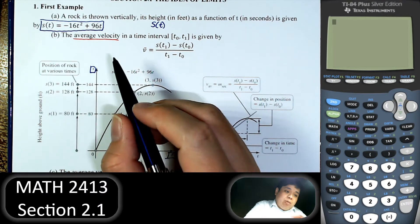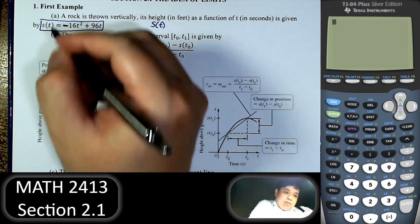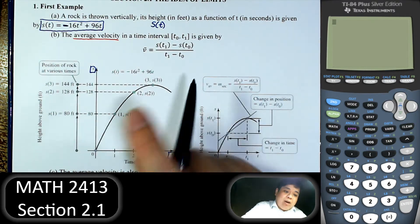Right now we focus more about the idea of limits. So we just briefly go to this. So the height or the function, this is a quadratic function. The graph is a parabola with negative leading coefficient. So it opens down.